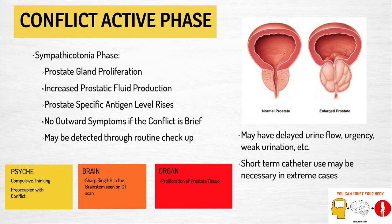There might be some suspicion from feeling a lump or checking PSA levels, giving suspicion that something might be going on. Some symptoms that may occur, especially if the issue has been going on for some time, include delayed urine flow, urgency, or weak urination. When the prostate is enlarged, it squeezes on the urethra and pushes up into the bladder. A short-term catheter may be necessary in extreme cases if there is extreme reduction of urine flow.